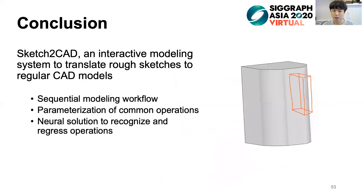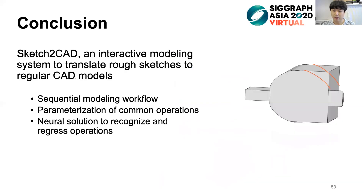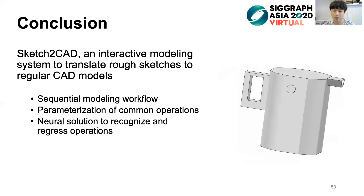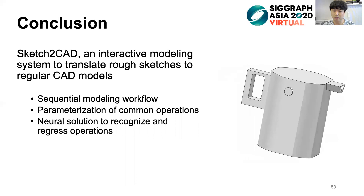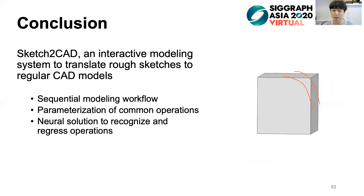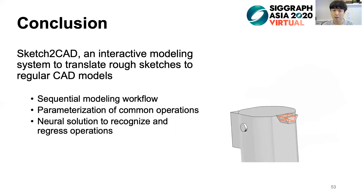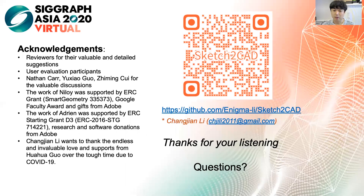To conclude, we propose Sketch to CAD, an interactive modeling system to translate rough sketches to regular CAD models. The proposed technical contributions enable our system to efficiently and effectively model diverse CAD shapes. We thank the reviewers and colleagues for valuable suggestions and discussions, user evaluation participants, and funding support. Code and data are available now — please feel free to try it. That's all; thanks for listening.